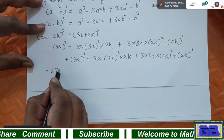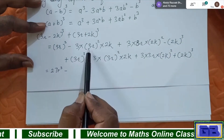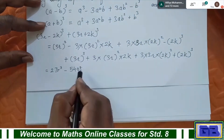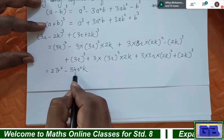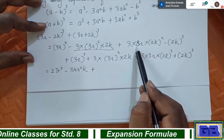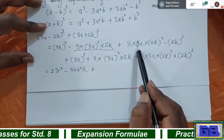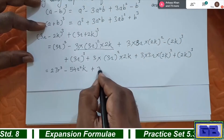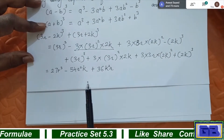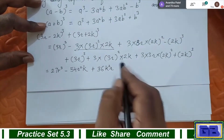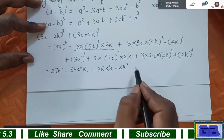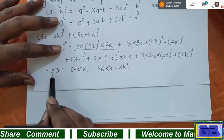Now calculate: (3r)³ = 27r³. Then 3 × 9 × 2 = 54, so minus 54r²k. Then 3 × 4 × 9 = 36, wait — 3 × (3r) × (2k)² gives 3 × 3 × 4 = 36, so plus 36k²r. Then minus 8k³. For the second bracket, all signs are plus, so copy the same: plus 27r³ + 54r²k + 36k²r + 8k³.